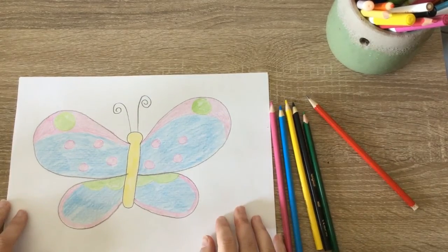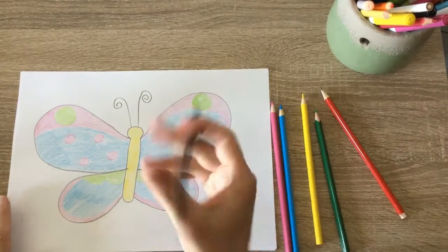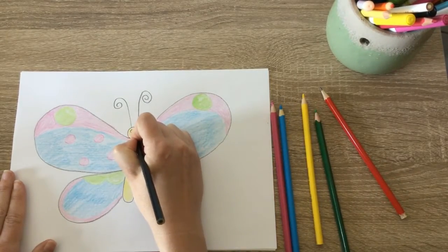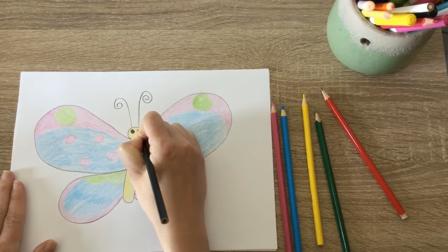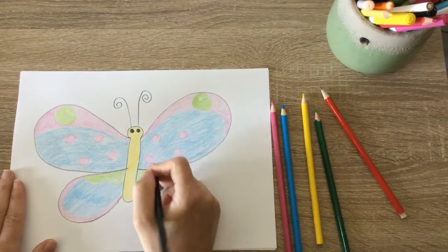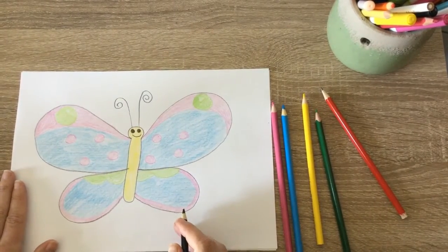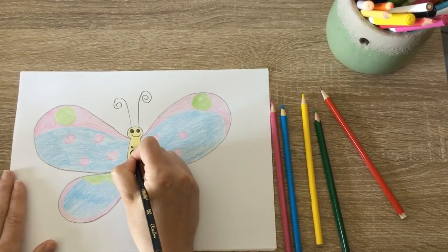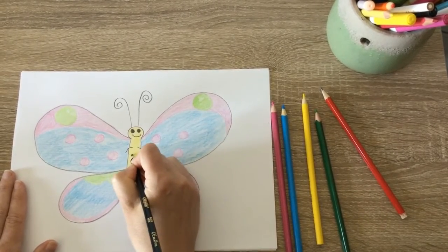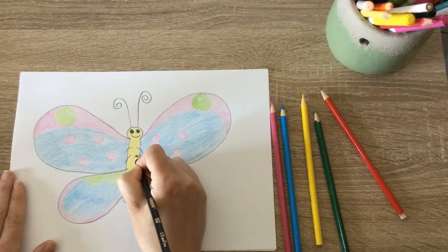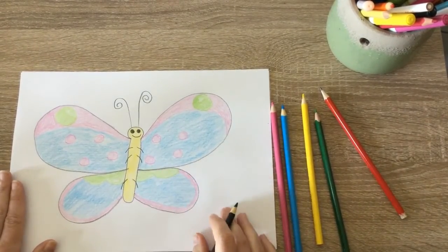And there we go. So I've finished coloring in my butterfly. And now what I'm going to do is I'm going to add some eyes to him right here. So I'm going to use my black pencil crayon, add some eyes. There we go. And I'm going to make him a happy butterfly. And if you want, you can add some legs as well. Remember, they've got six legs.